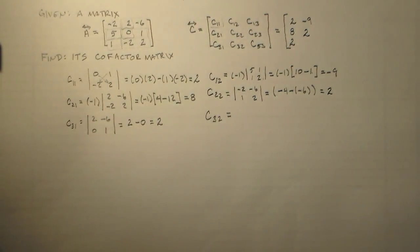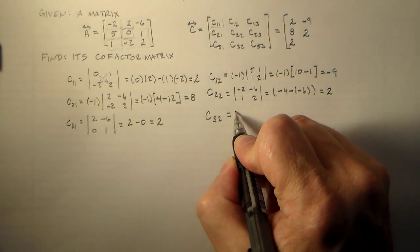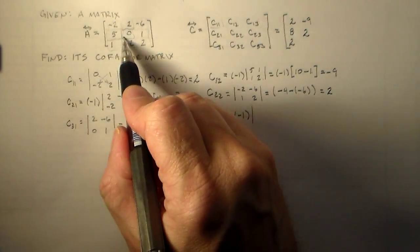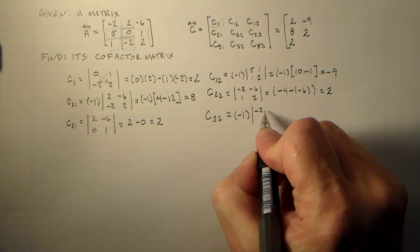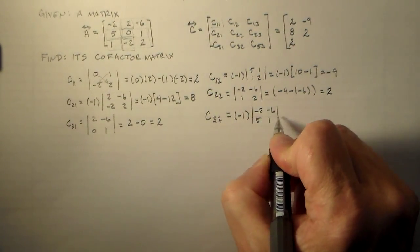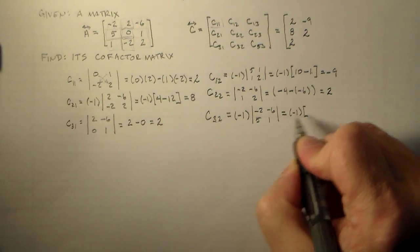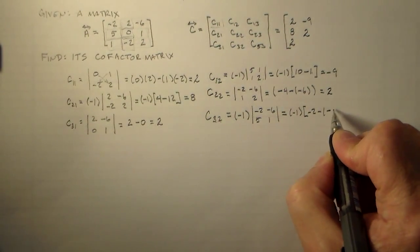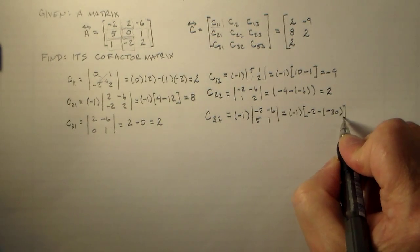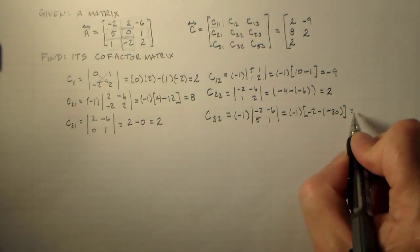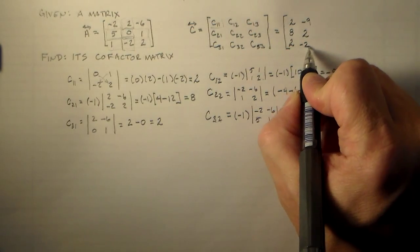C32. That's our last one in this column. That's 3 plus 2 is 5, which is odd. So we multiply by negative 1. Take everything not here. So we have minus 2, minus 6, 5, 1. And that's equal to minus 1 times minus 2 minus, minus 6 times 5 is 30. So, that means we've got 30 minus 2 is 28 times minus 1. We have minus 28. And one of these things is not like the others. There it is.